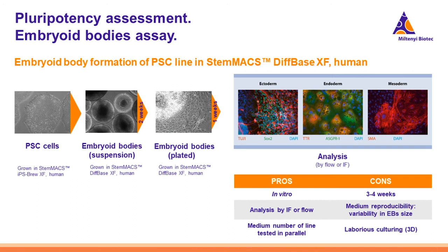Embryoid Bodies are initially grown in suspension for about two weeks, then plated for about one week. During the first phases, cells are maintained in a culture media not supplemented with cytokines or small molecules but formulated to support cell survival and multiplication. The final analysis of marker expression can be done either by flow cytometry or by immunofluorescence.